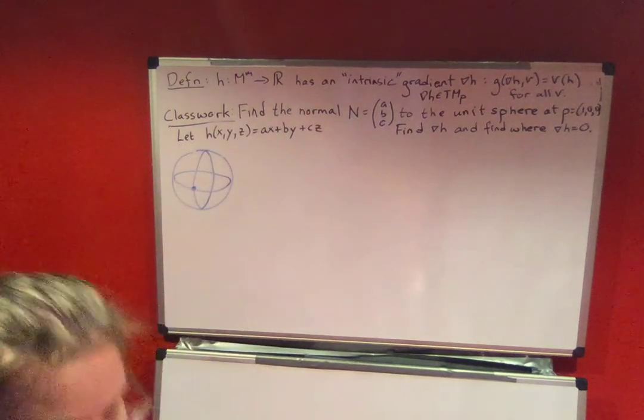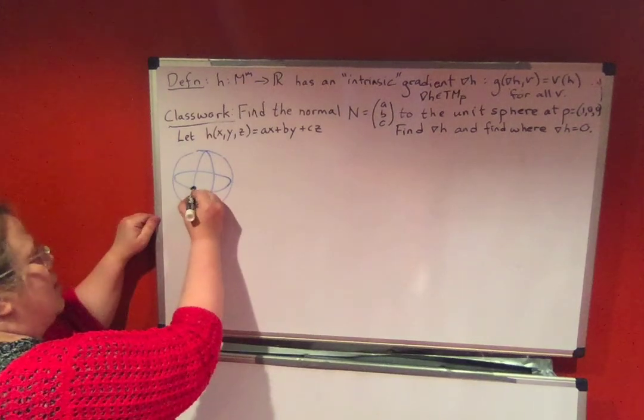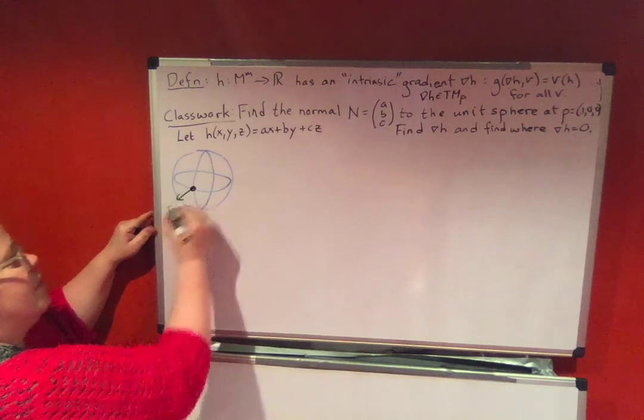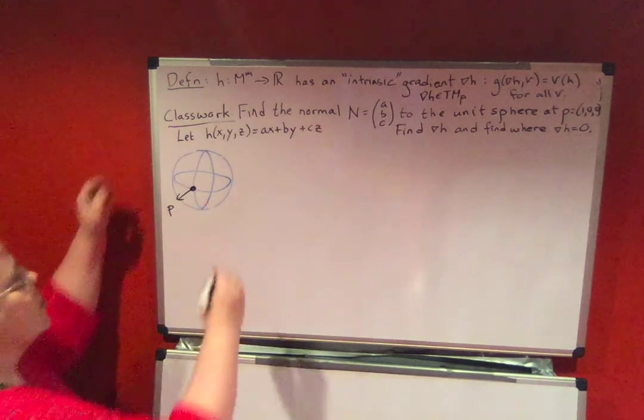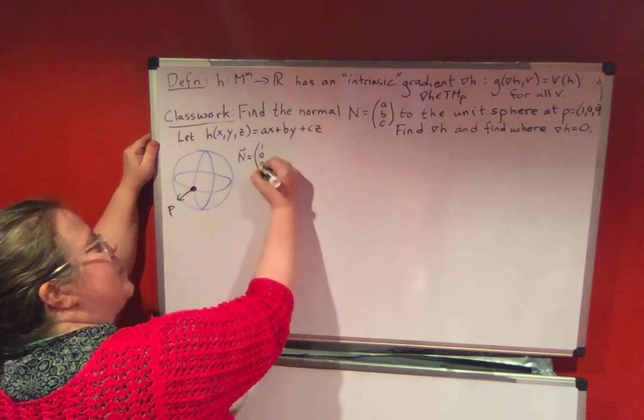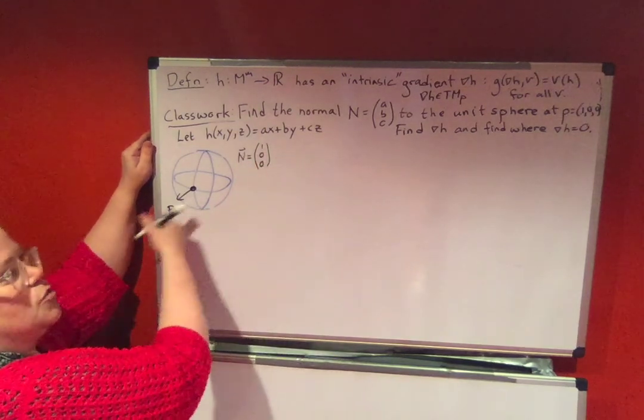Our point P is the point (1,0,0), which is right over here. So that's our point P. And we're going to find the normal to P. Now we've found the normal to P in the past. So our normal in this case is actually equal to (1,0,0). We've done this in the past and it's very easy to see that it's (1,0,0).